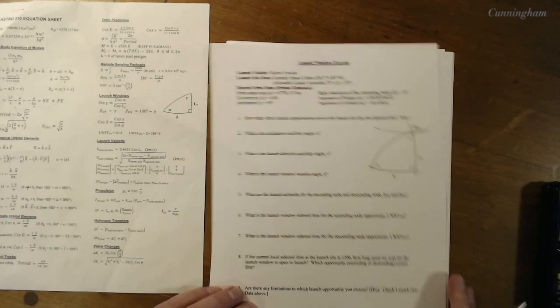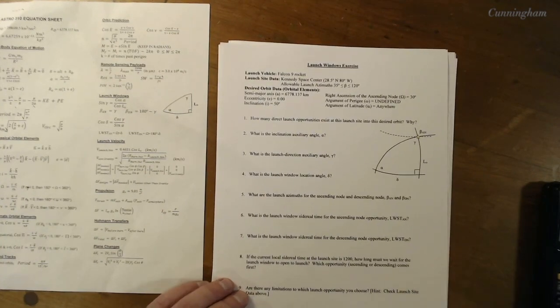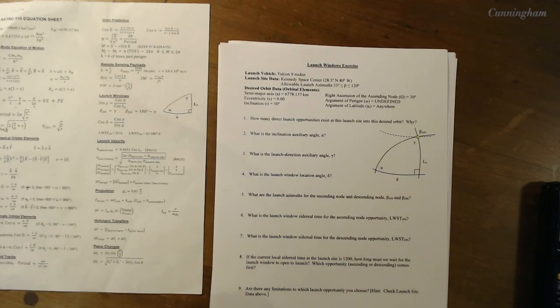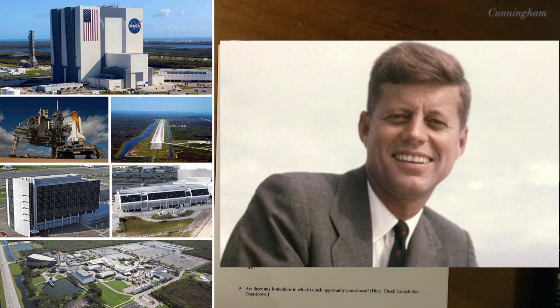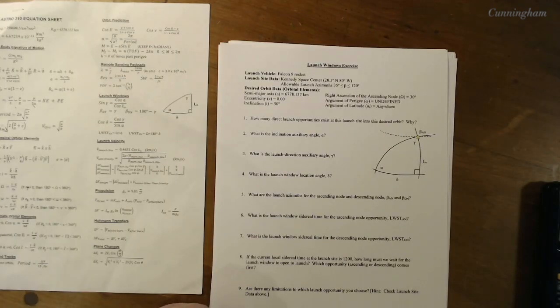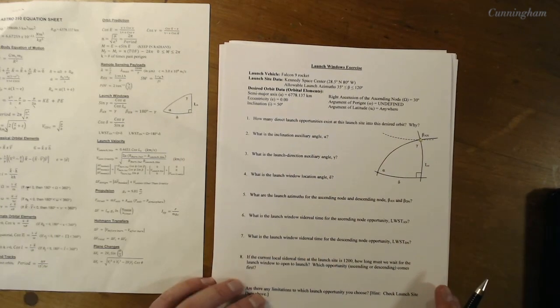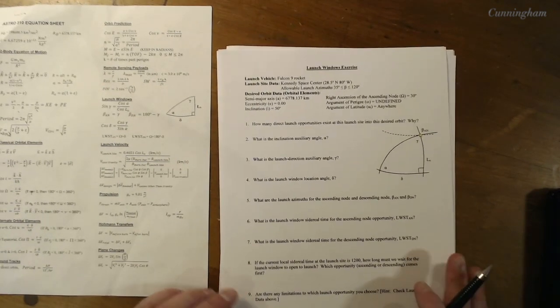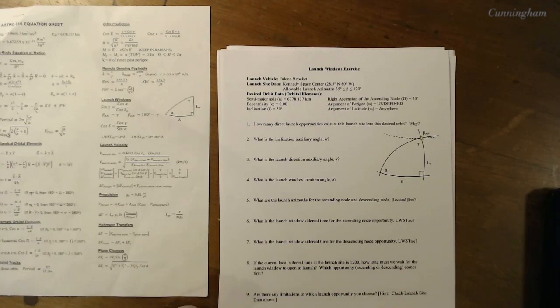Let's take a look at this exercise. It gives us some initial orbit information that we'd like to launch into. Remember we're not actually orbiting yet, but it says we're using one of SpaceX's favorite Falcon 9 rockets and we're launching from Cape Canaveral, which is another name for the Kennedy Space Center. We're allowed to launch basically east-ish, east-north-ish, or east-south-ish between 35 and 120 degrees. And here's the desired orbital elements that we want to launch into.